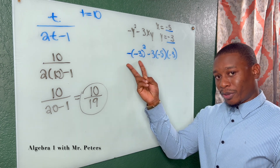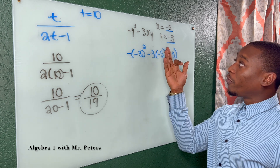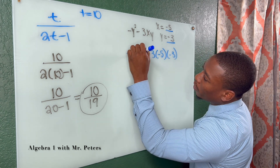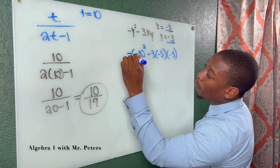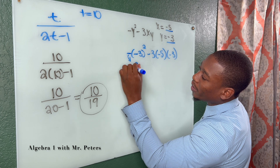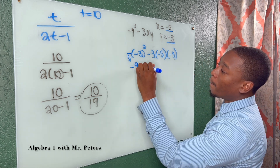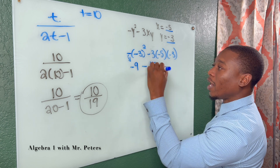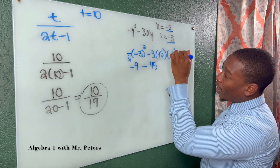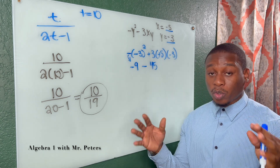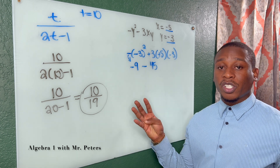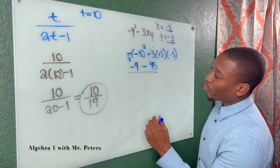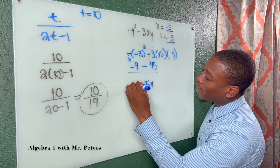The biggest mistake students make is forgetting one of the negative signs, thinking it's already negative so they don't need to plug it in — that is wrong. When we take negative 3 to the second power, we get 9. But remember, this is the opposite of y squared, so we bring down negative 9. Then negative 3 times negative 3 is 9, times 5 is 45, which is also negative because negative times negative is positive, and positive times negative is negative. Our final step gives us negative 54.